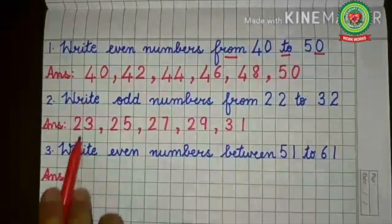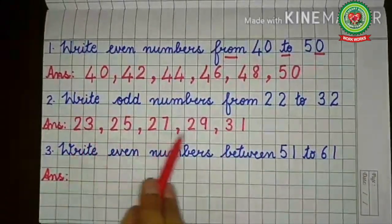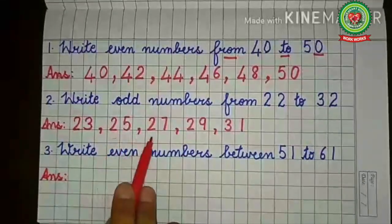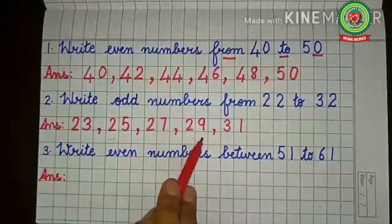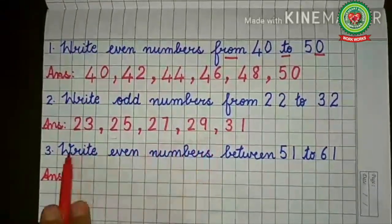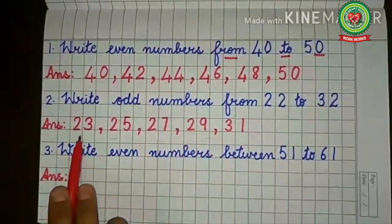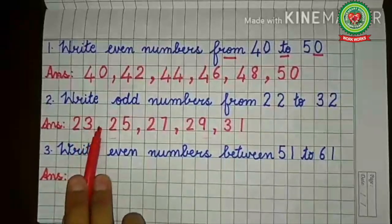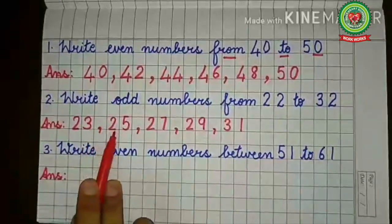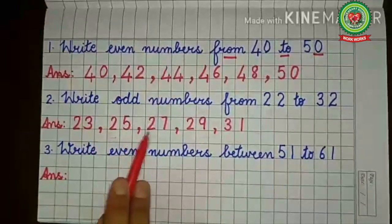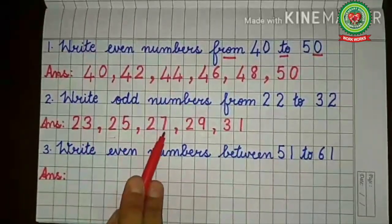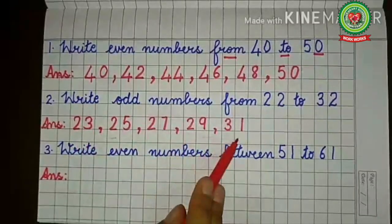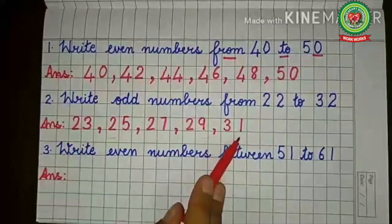Children, you can notice that we are skipping alternate numbers by two digits each time. We wrote twenty-three, skipped twenty-four, wrote twenty-five, skipped twenty-six, then twenty-seven. You can notice the pattern.